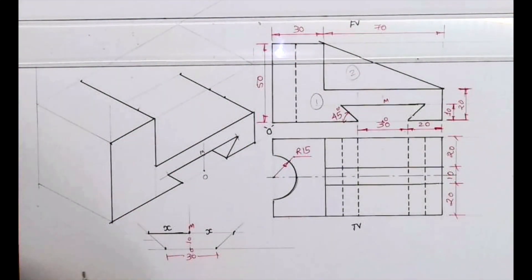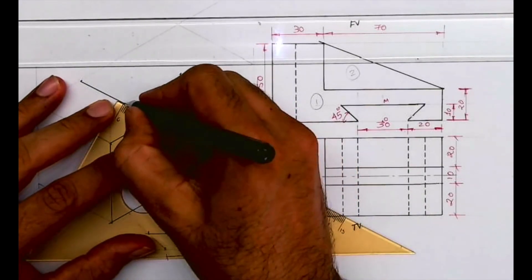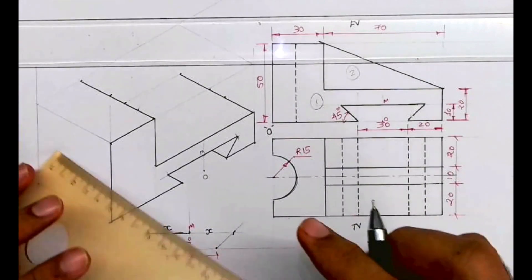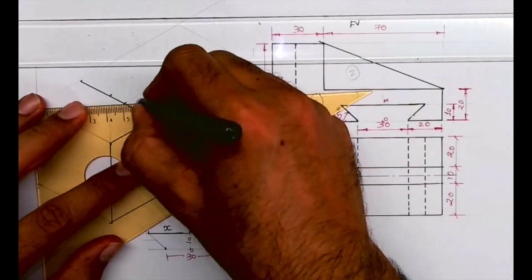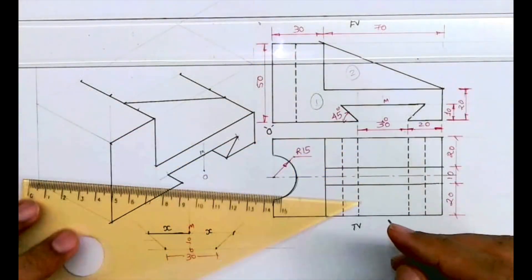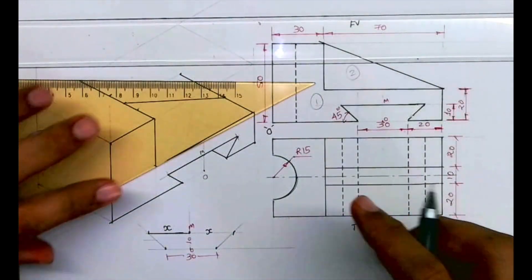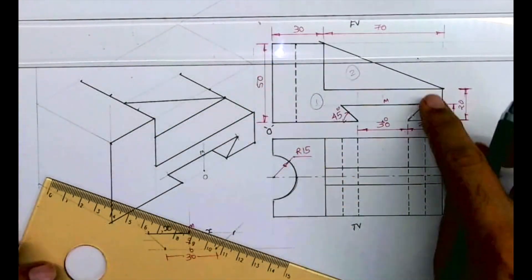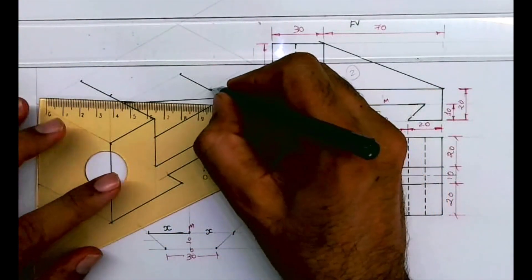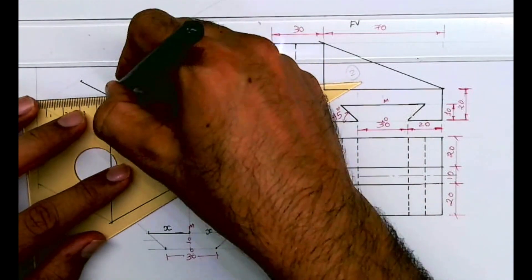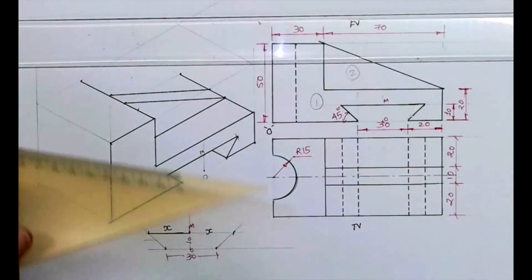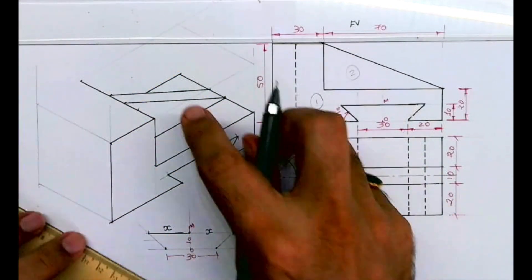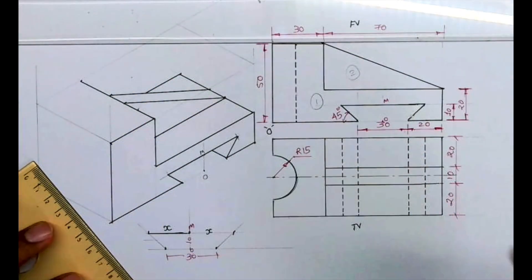Now we need to draw part two. If you see part two, it is how much behind? 20 behind. So I will mark 20 and then I will mark 10. From here you draw a line with slope and you draw a parallel line like this. Then again we will draw one more line at a distance of 10 and again we will draw one more parallel line. So we are done with part two also.